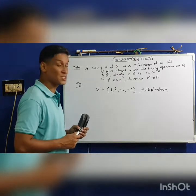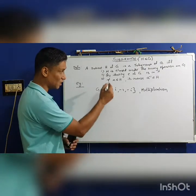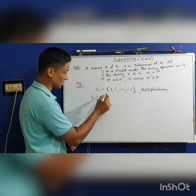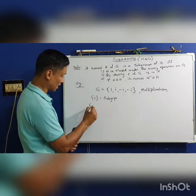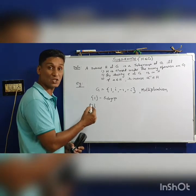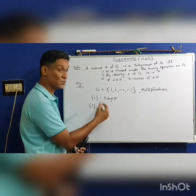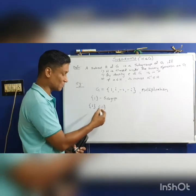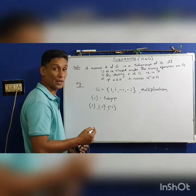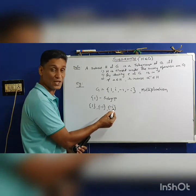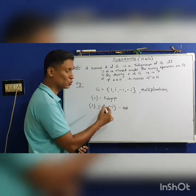What are the subgroups? {1, i} — 1 into i is i, and i into i is -1, which is not a member of {1, i}, so this is not a subgroup. {-1} alone: -1 into -1 = 1, and {-i}: -i into -i = -1, which is not a member, so those are not subgroups due to closure property failure.